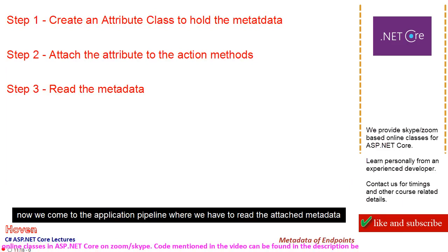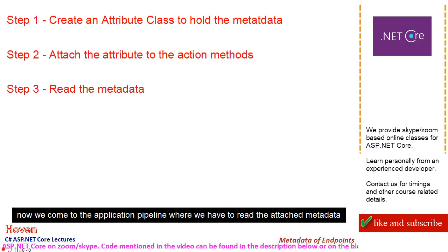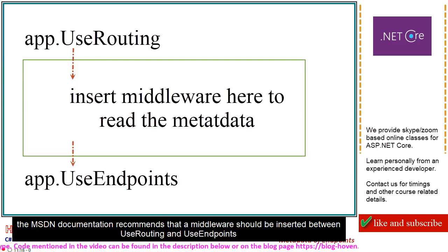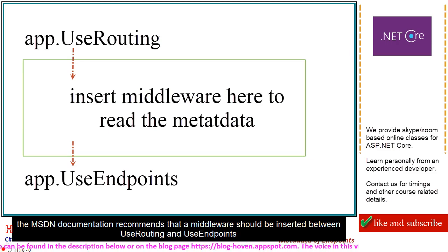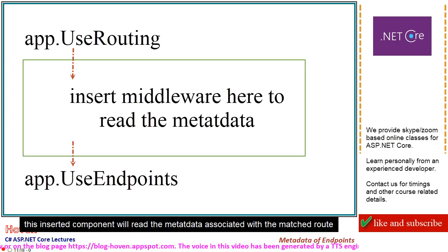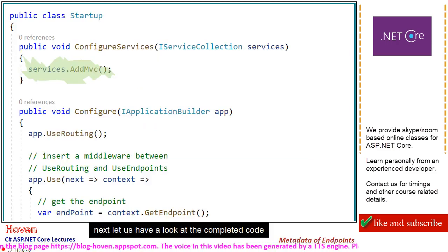Now we come to the application pipeline, where we have to read the attached metadata. The MSDN documentation recommends that a middleware should be inserted between UseRouting and UseEndpoints. This inserted component will read the metadata associated with the matched route. Next, let us have a look at the completed code.